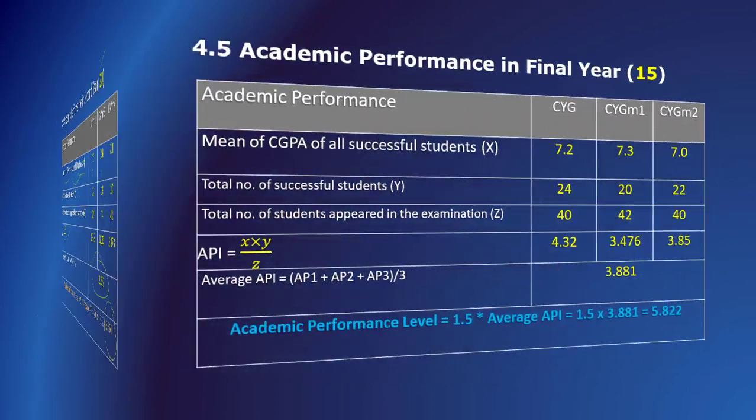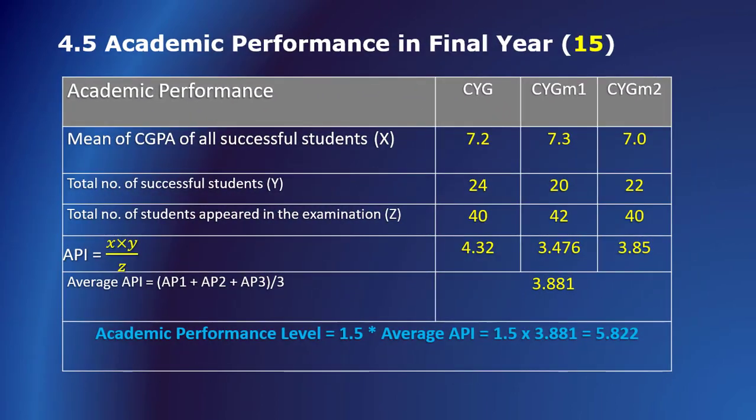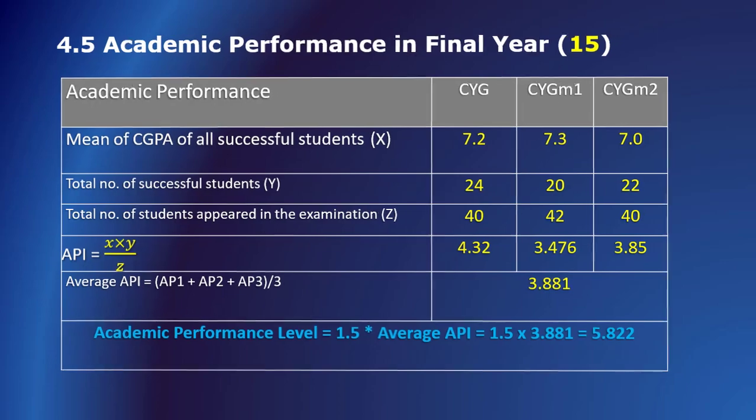Criterion 4.5 covers academic performance in the final year for 15 marks. This is exactly the same calculation as for first year and second year. The department needs to produce the supporting documents to the visiting team.